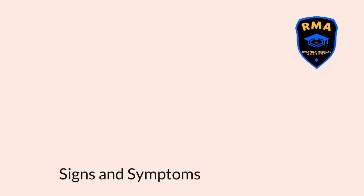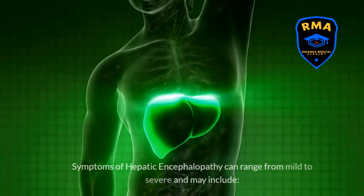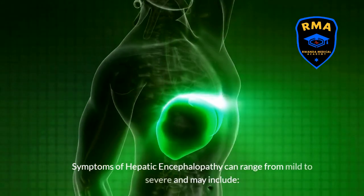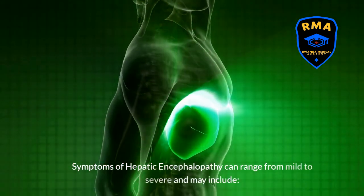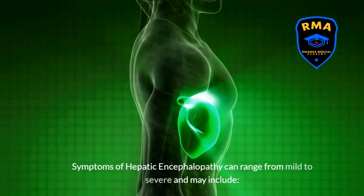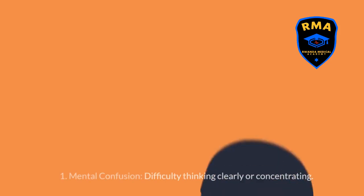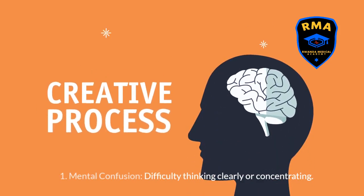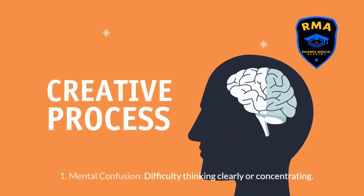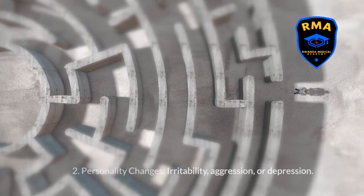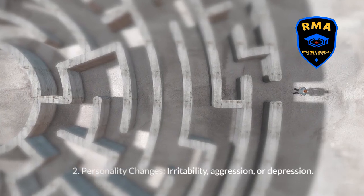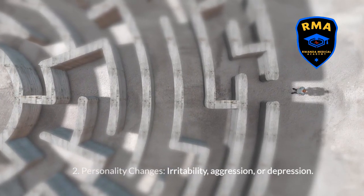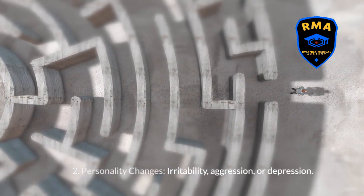Signs and symptoms. Symptoms of hepatic encephalopathy can range from mild to severe and may include: 1. Mental confusion — difficulty thinking clearly or concentrating. 2. Personality changes — irritability, aggression, or depression.